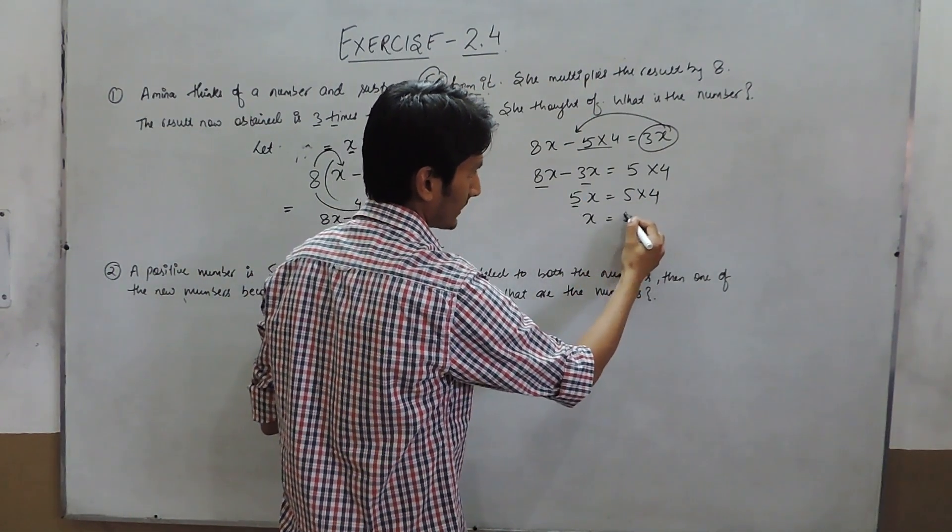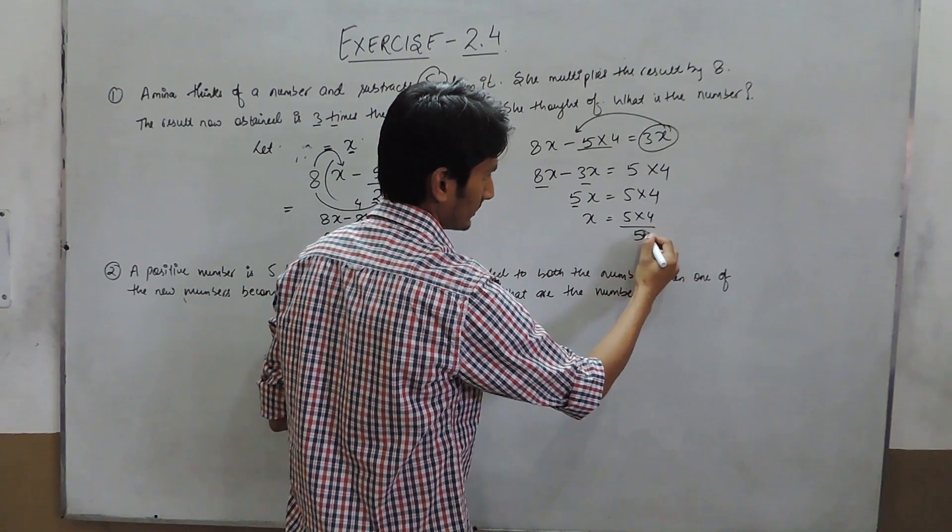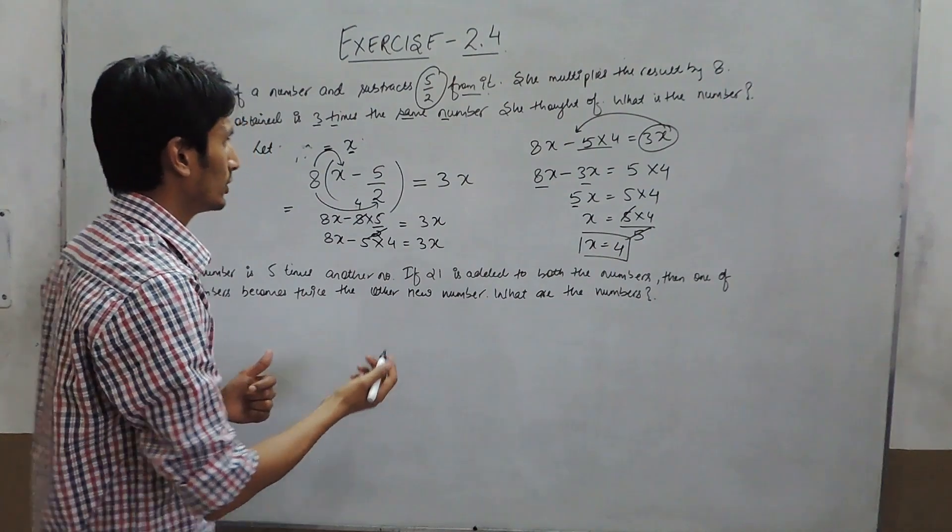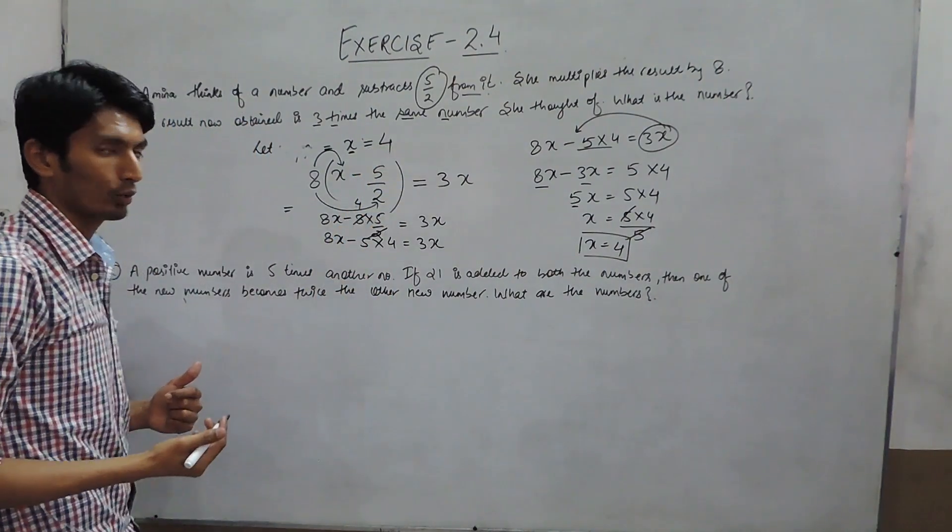When shifted to the other side, we get 5x = 20, so x comes out to be 4. So the number should be 4.